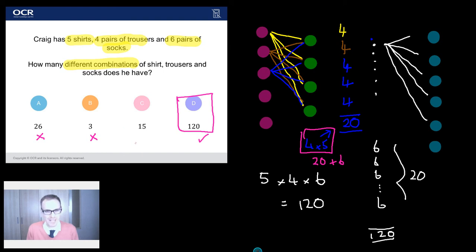And fifteen. Fifteen's a common one right? Fifteen. You can see that. Five plus four plus six. There's got to be fifteen different combos. But no. We've got to multiply. And we've seen why with this diagram. Hopefully.